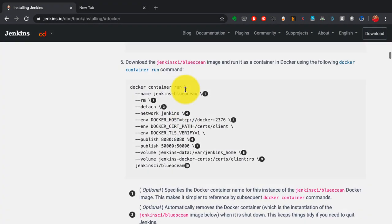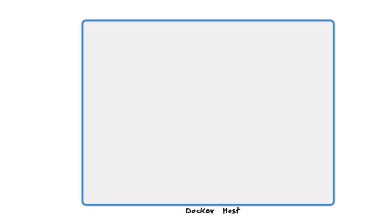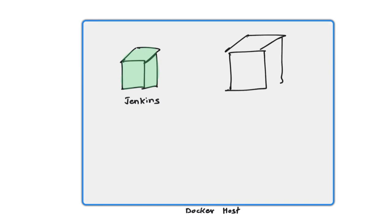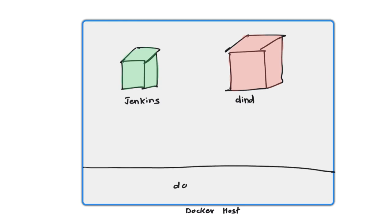Let's look at what that dind container is and how this is going to look when you launch it. Assuming you're running on a docker host — a docker host is the one which runs the docker daemon — you'd be launching the Jenkins container, which is the actual continuous integration platform where you configure everything: jobs and pipelines. Along with that, it sets up the dind container. You would have a Docker client that connects to the docker daemon, which listens to a socket, and from your client you run docker container run instructions for Jenkins and for dind.